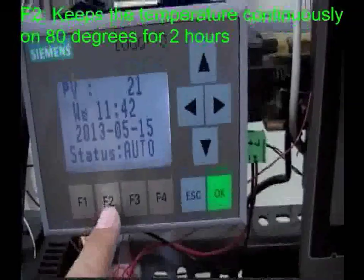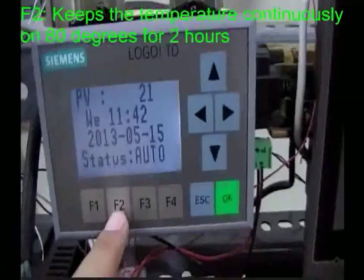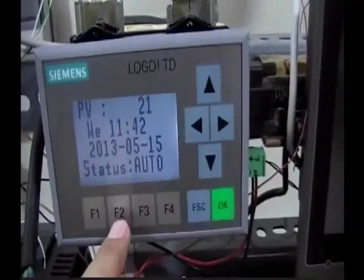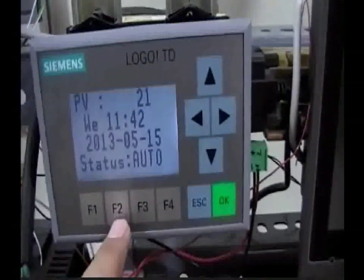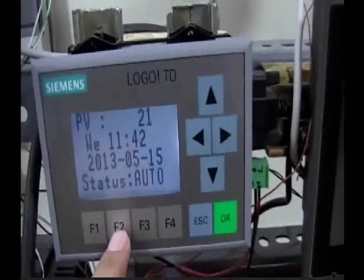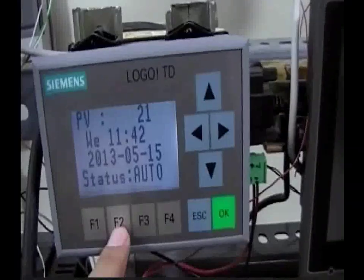Function 2 is a constant temperature. It takes about two hours and tries to keep the temperature of the water in the container at 80 degrees Celsius.